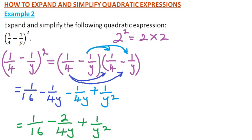From there, we can now simplify, which equals 1 over y squared. We start with that. And then this 4 divided by 2 is 2, so here we have 2. So here we write 1 over 2y, and then we have plus 1 over 16. That is our expansion. So that is how you expand that quadratic expression.